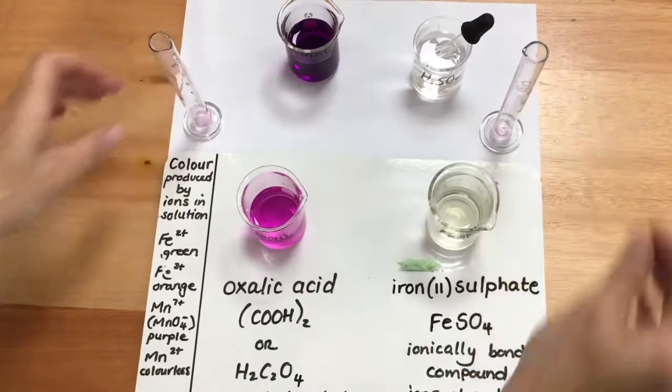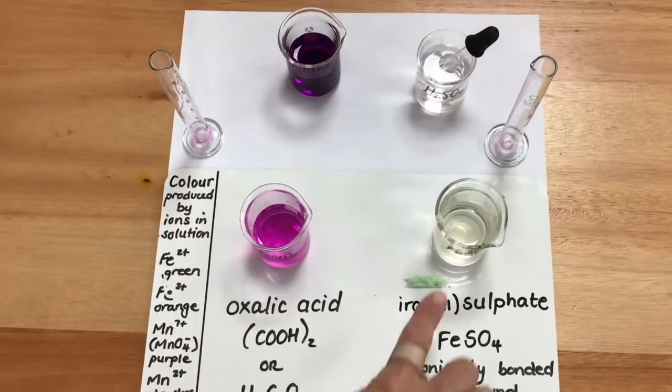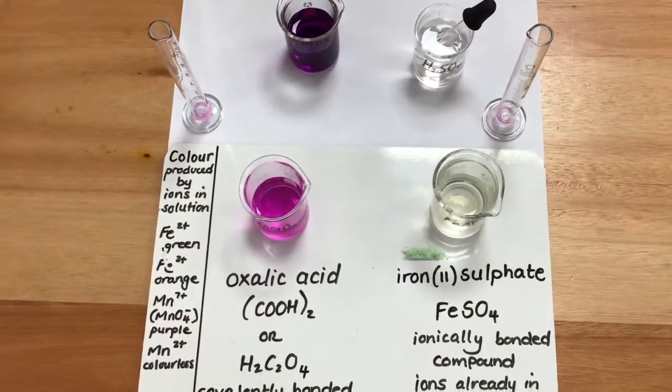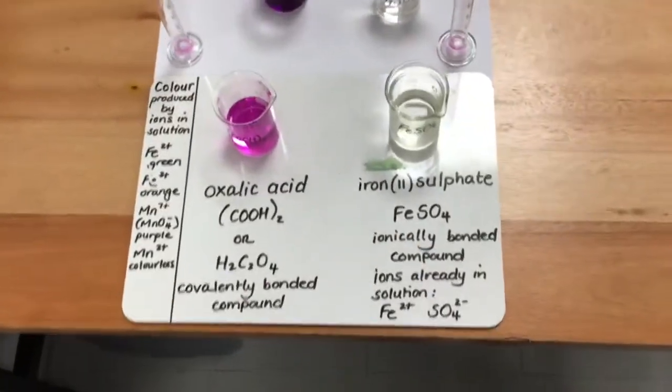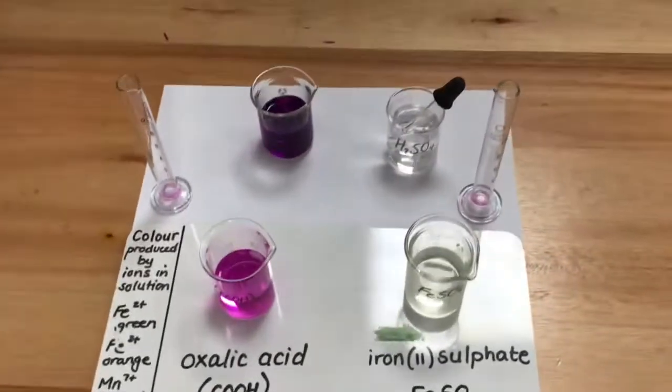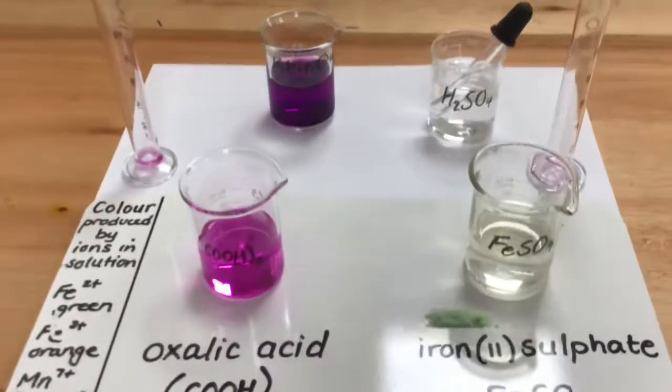You notice that the purple solution turned colorless immediately in the iron(II) sulfate solution, showing that the reaction between iron(II) sulfate and potassium permanganate was very rapid.